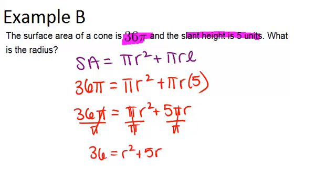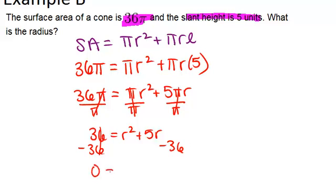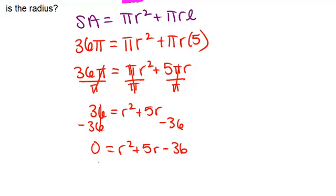This is a quadratic equation. You want to solve this by first setting it equal to zero, and then you can use factoring and the zero product property, or you could use the quadratic formula. In this case, I'm going to factor, because I see it can be factored, as r plus 9 and r minus 4.